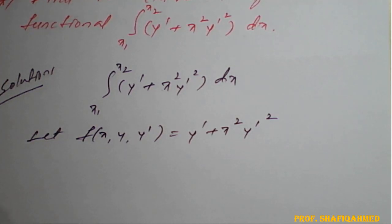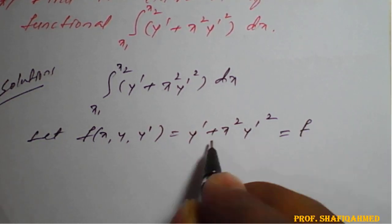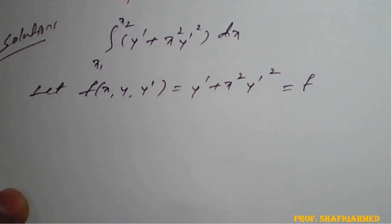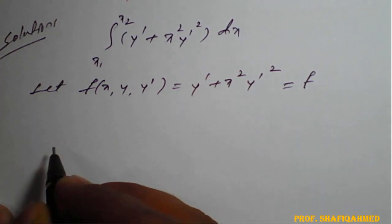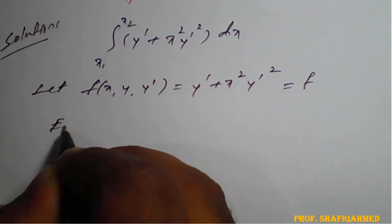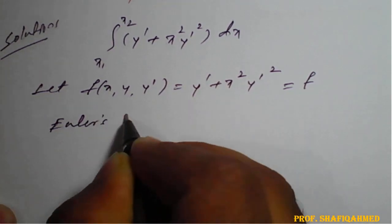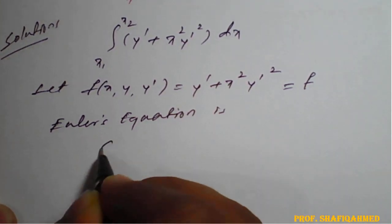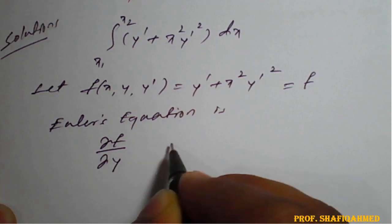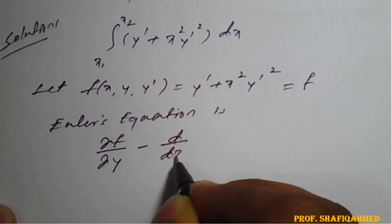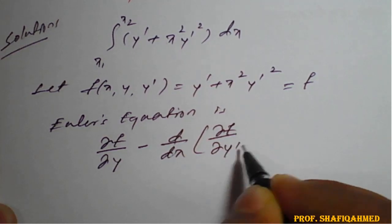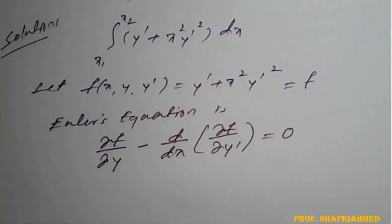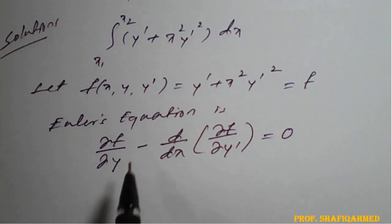f, or f(x, y, y'), all refer to the same function. Now Euler's equation is given by: ∂f/∂y − d/dx(∂f/∂y') = 0. This is Euler's equation, and using this we need to find the extremal.